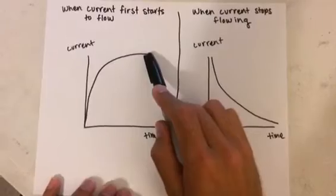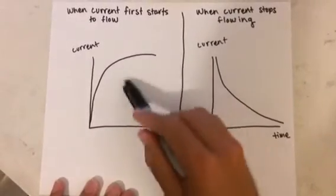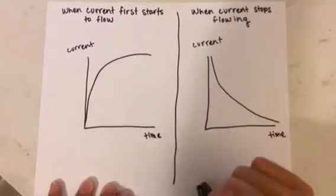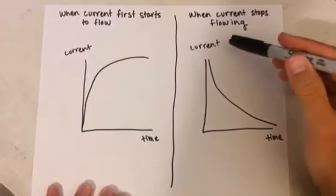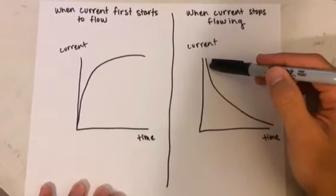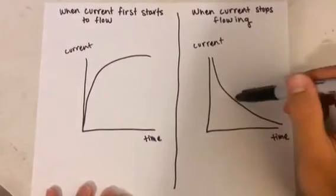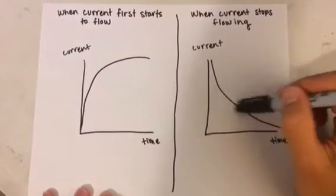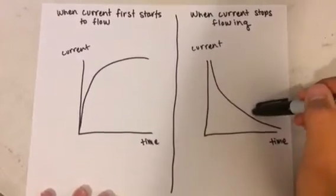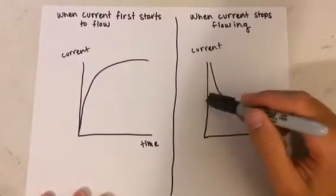When current stops flowing, the magnetic field starts to collapse and the magnetic energy gets turned back into electrical energy. But notice that there is still some more energy left over even after the current has stopped flowing.